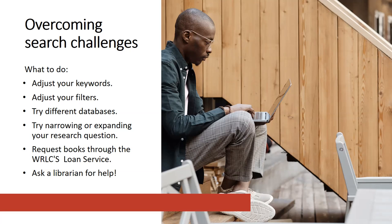Something else you can do is consider narrowing or expanding your research question. If your question is providing too much information, it may not be specific enough. For instance, 'how does gentrification impact cities?' is a really broad question. You can actually think about reframing that to something like 'how does gentrification impact the public health of teenagers in Ward 8?' — that's really specific to a particular group of people and a particular location, and it will help you hone in on more relevant results.